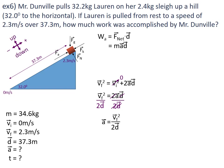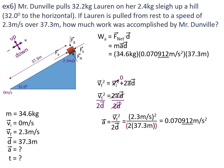We'll substitute our numbers in: acceleration equals 2.3 squared divided by 2 multiplied by 37.3. Make sure you double-bracket the bottom, otherwise your calculator will think 37.3 was supposed to be in the numerator. You will know you entered it correctly if you get an acceleration of 0.070912 metres per second squared.